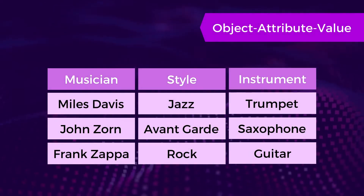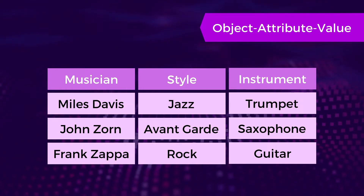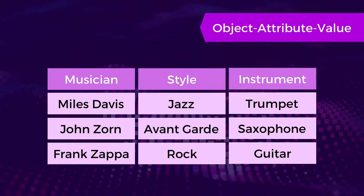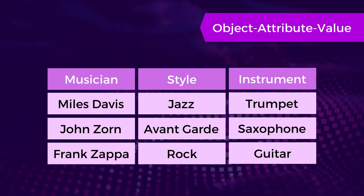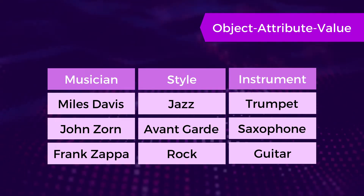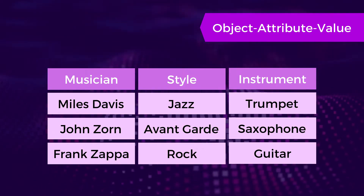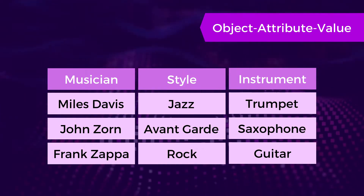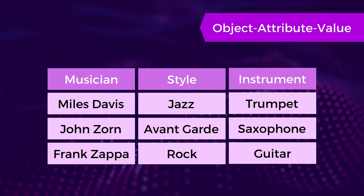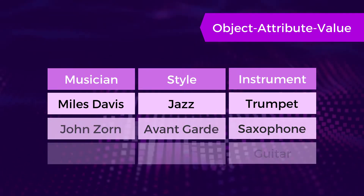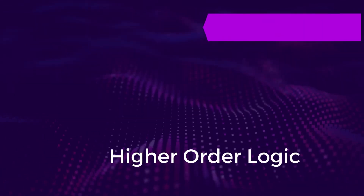Object attribute value is a simple way to store facts. Each fact about a group of objects is set out systematically in columns. For example, in this table, you can see that each row belongs to one object and each column has the facts or attributes about the objects. There is little opportunity for inference.